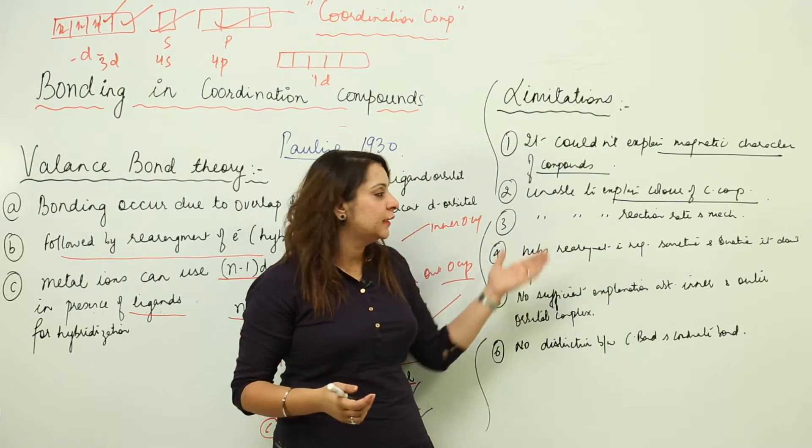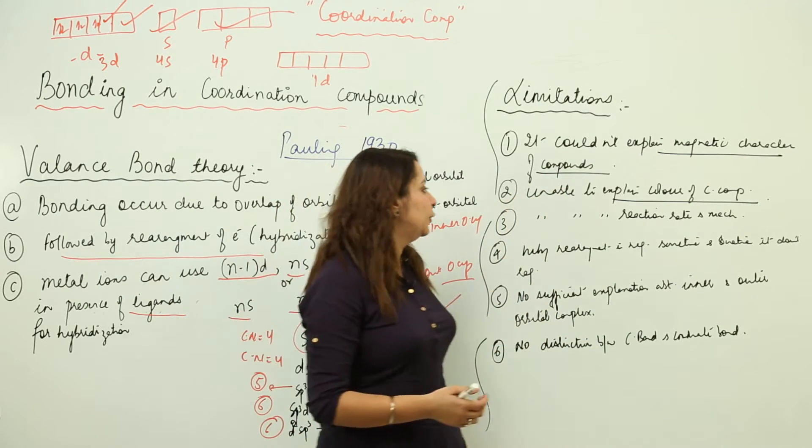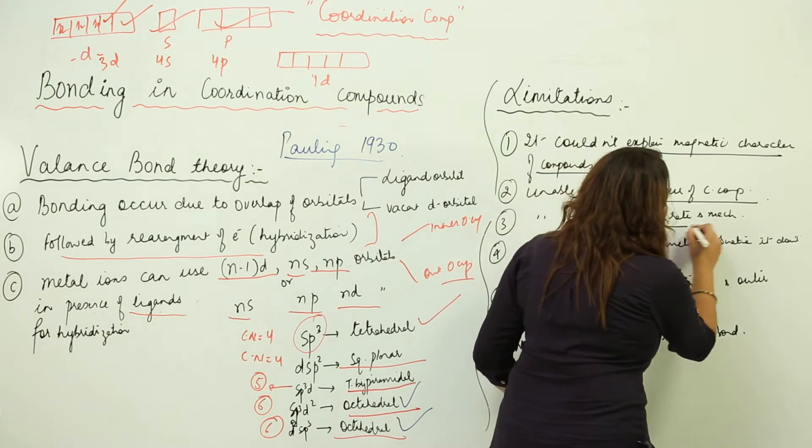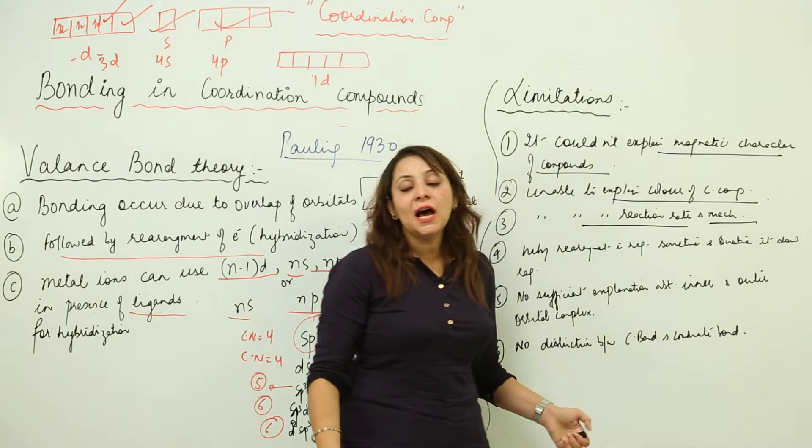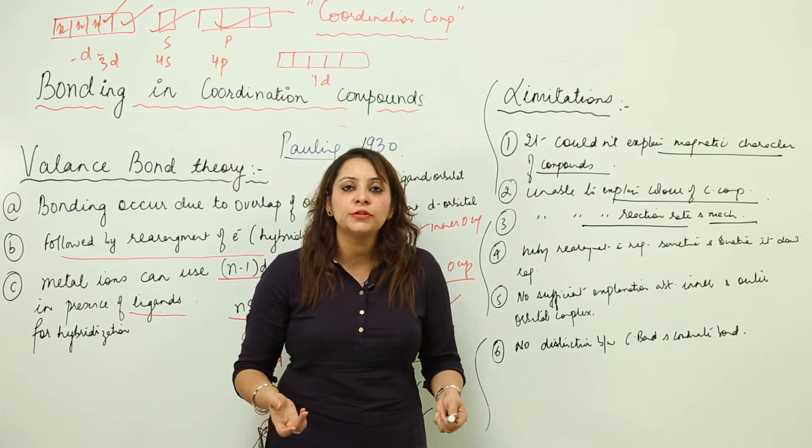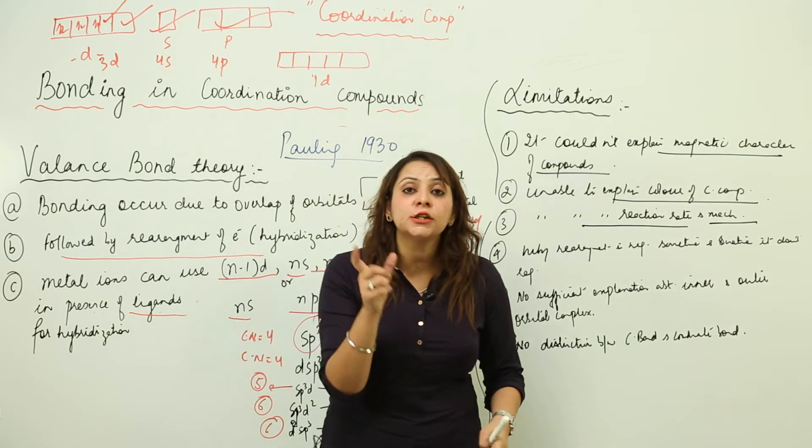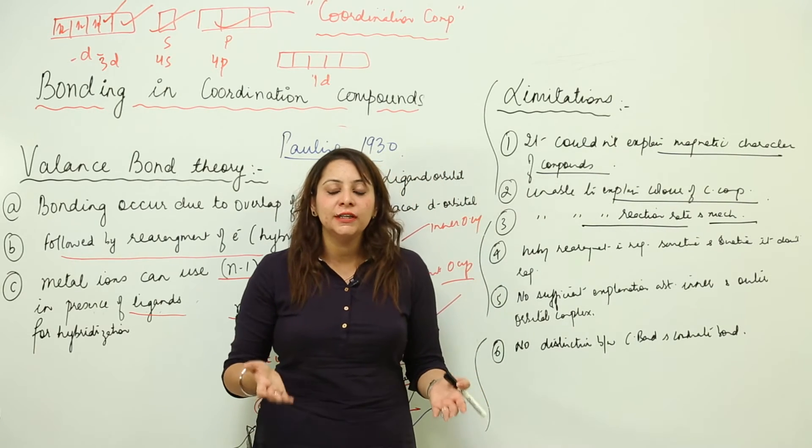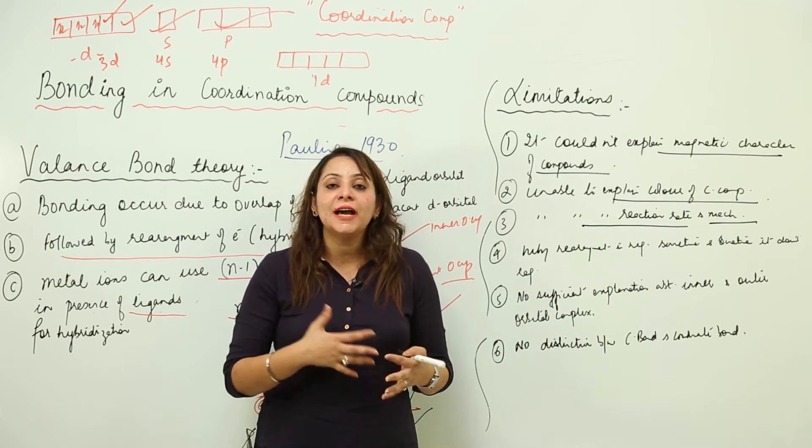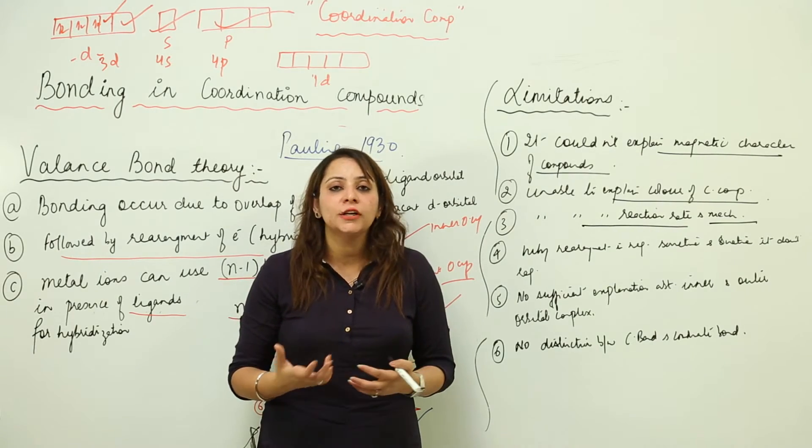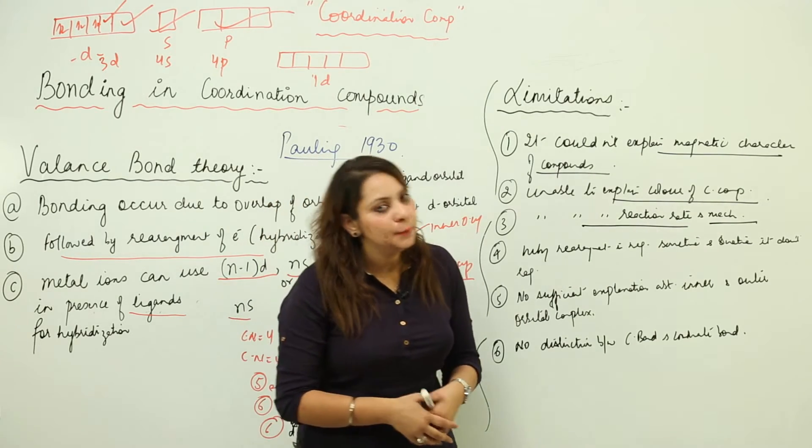Third, it doesn't tell us about the reaction rate and mechanisms—how fast or slow the reaction is going to take place. As we all know, the formation of coordination bonds is actually a slow process, but this theory doesn't try to explain the reaction rate or mechanism. So again, this is a limitation to this theory.